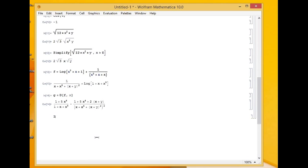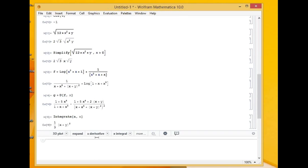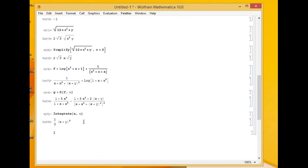To integrate something, the command is simply Integrate. Say if I want to integrate a with respect to x. Remember, a was x plus y whole square. So I get the value of the integration. The complex I is represented in Mathematica by capital I. If I do capital I square, remember I square is minus 1, it gives me minus 1. Perfect.